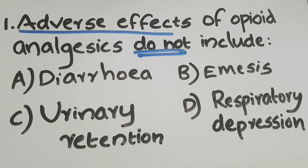When opioid analgesics bind to the opioid receptors present in the brain, they block the brain's ability to perceive pain, and as a result they can effectively reduce the sensation of pain. Main examples of opioid analgesics include morphine, codeine, and methadone. A major antagonist of this opioid receptor is naloxone.